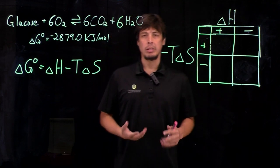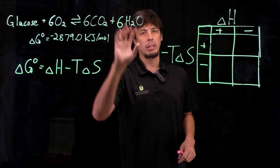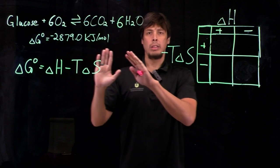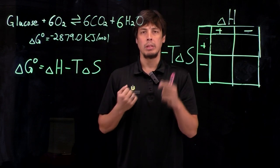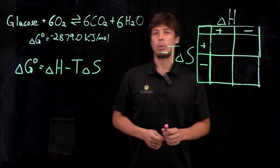Now we know from calculating the standard free energy for the combustion of glucose to carbon dioxide and water, that the free energy term is very negative at negative 2879 kilojoules per mole.